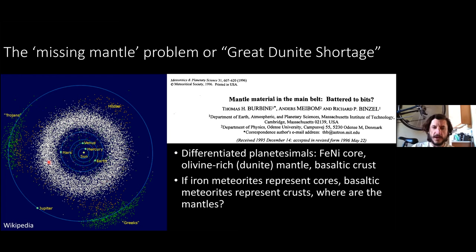These early planetesimals were blown apart in the impact phase of planet formation, and their remains populate the asteroid belt. So if iron meteorites represent iron cores, and basaltic meteorites represent the crusts of differentiated planetesimals, then it begs the question: where are the olivine-rich mantles? They should be the dominant material found in the asteroid belt.